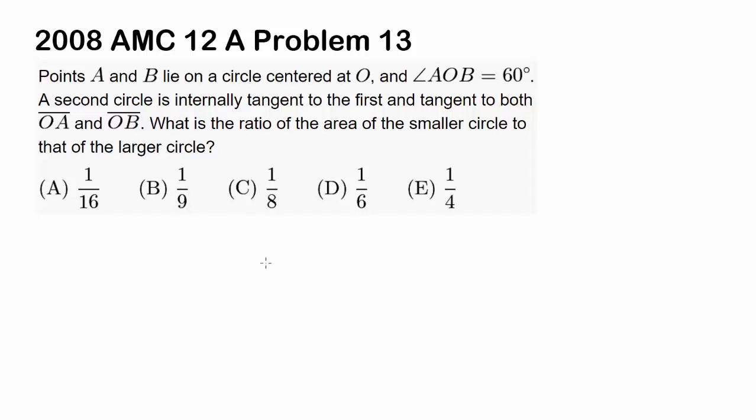This is 2008 AMC 12A problem 13. Points A and B lie on a circle centered at O, and the central angle AOB is equal to 60 degrees.